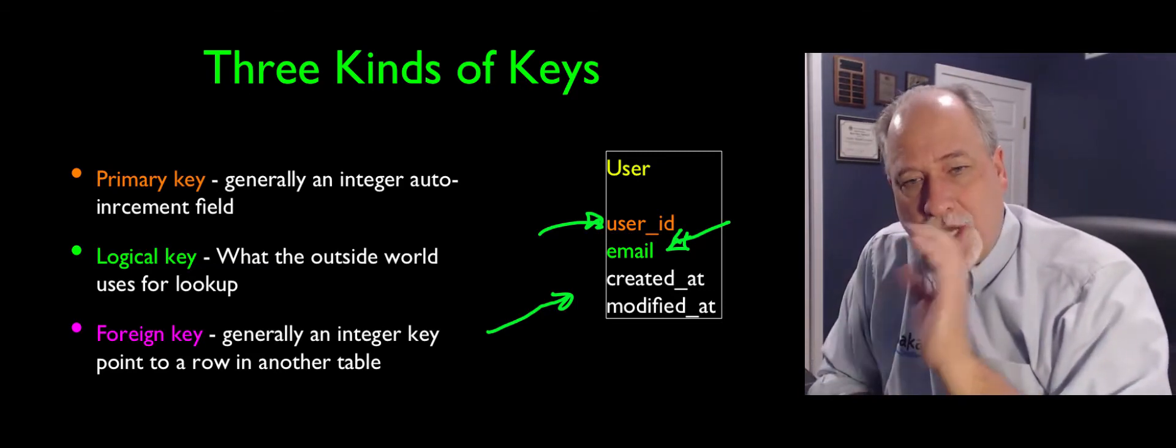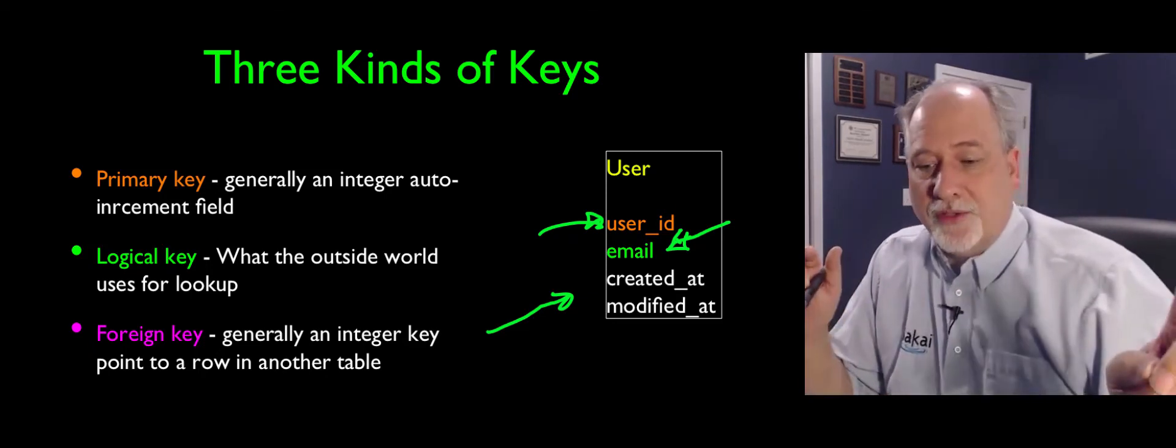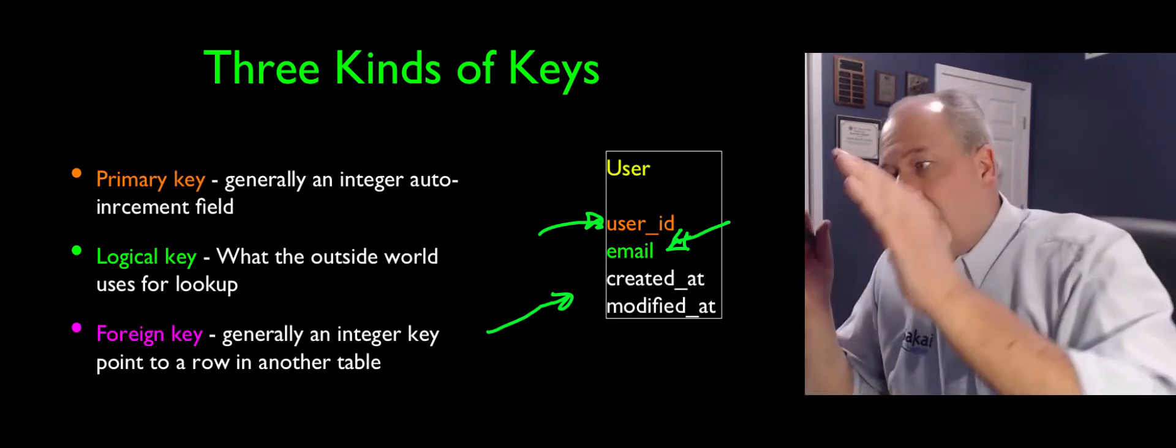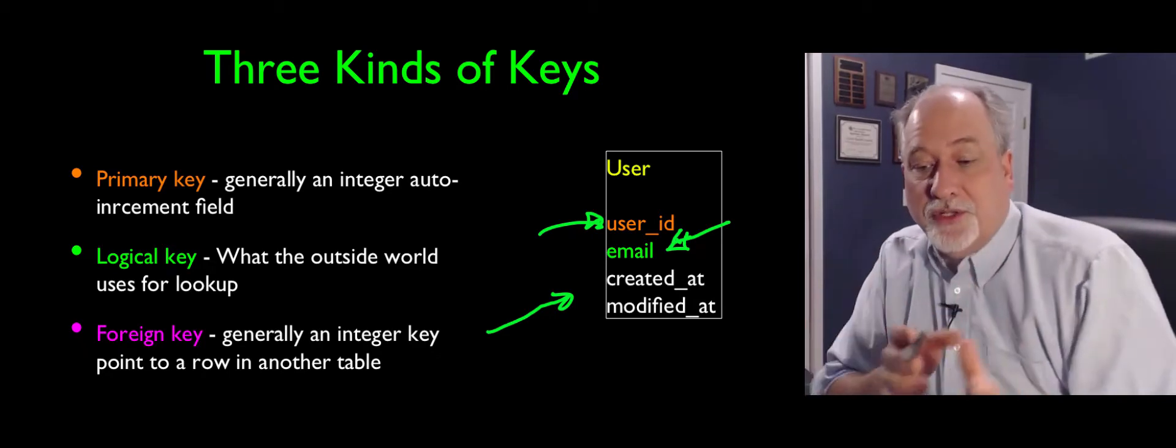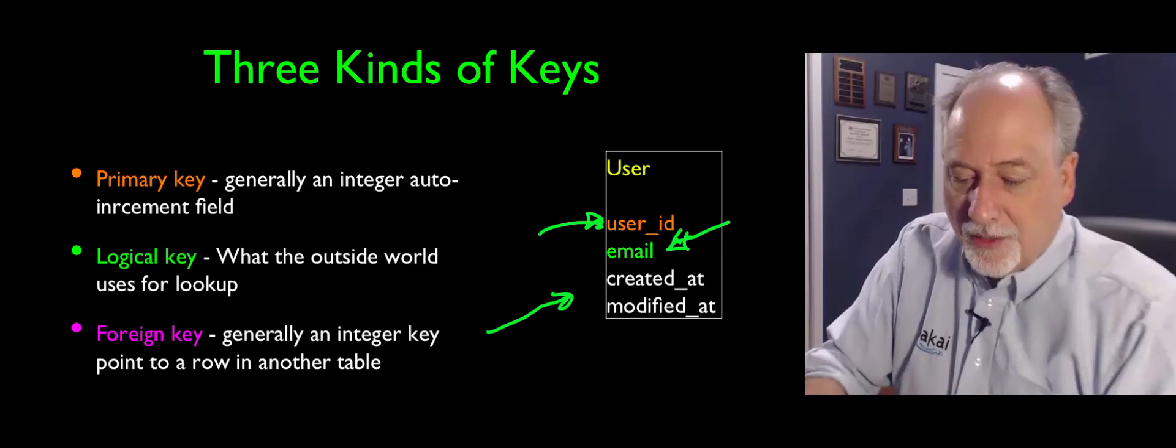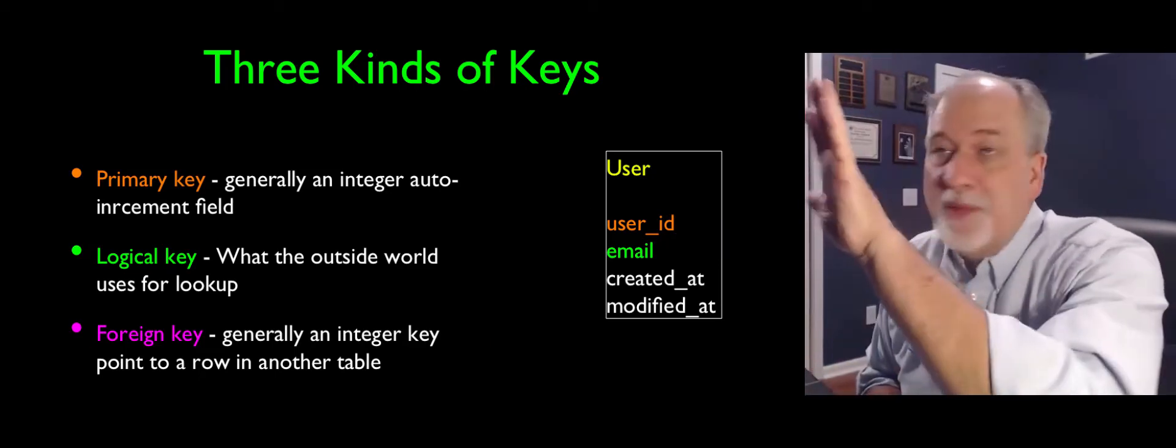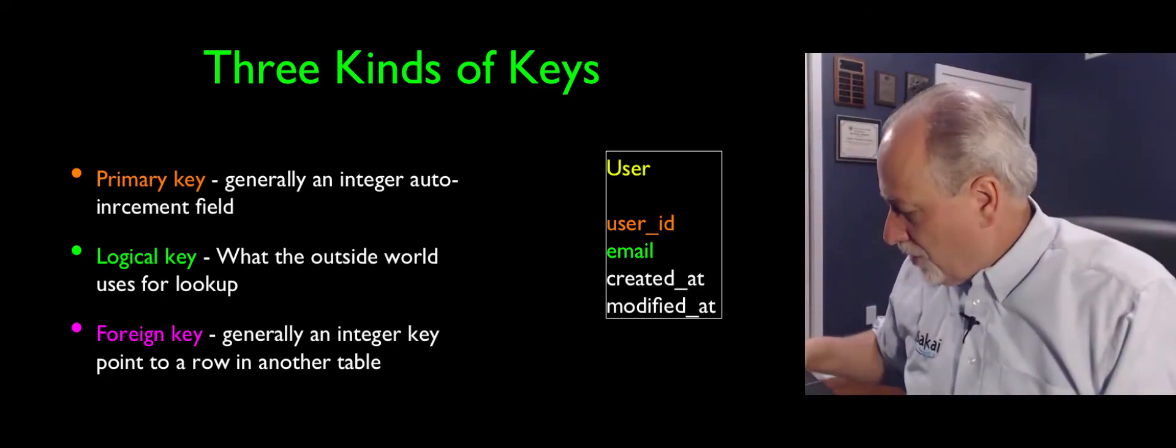The primary key is generally just a number that's used inside the database, from one table to the other table. But the outside world knows who this user is. And this user might be csev@umich.edu.